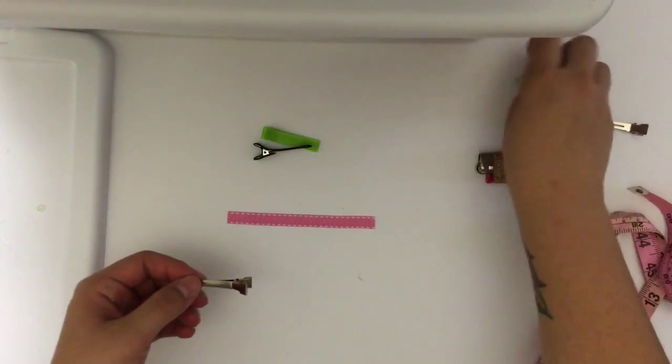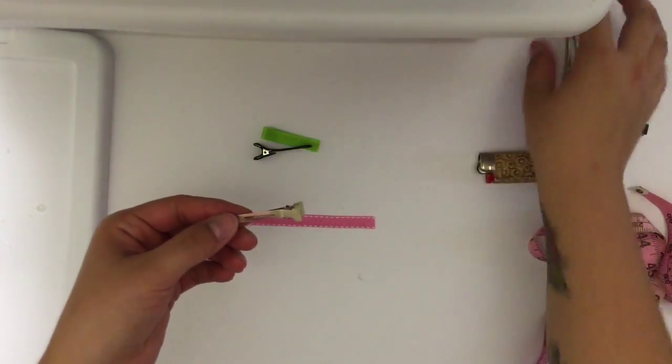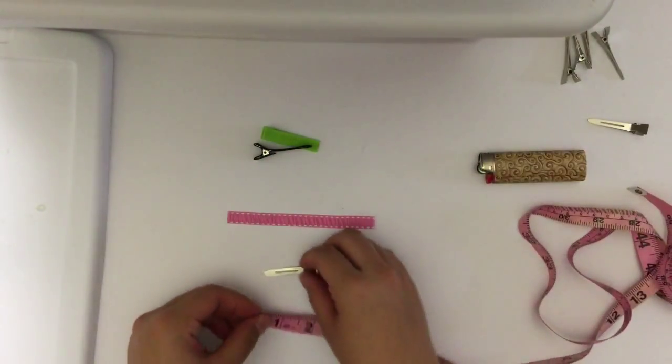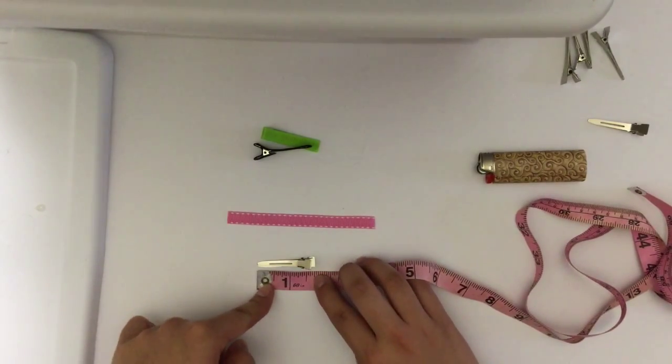You will also need some alligator clips. You can purchase these at any craft store - Michael's, Walmart, Hobby Lobby. They are the cheapest if you purchase them from a private seller on Amazon or eBay.